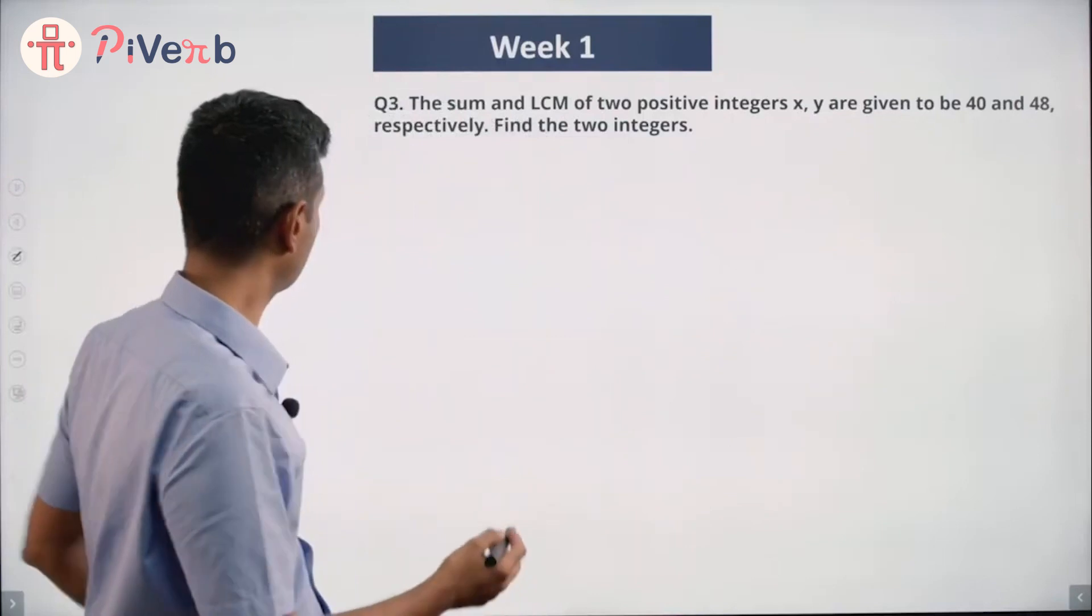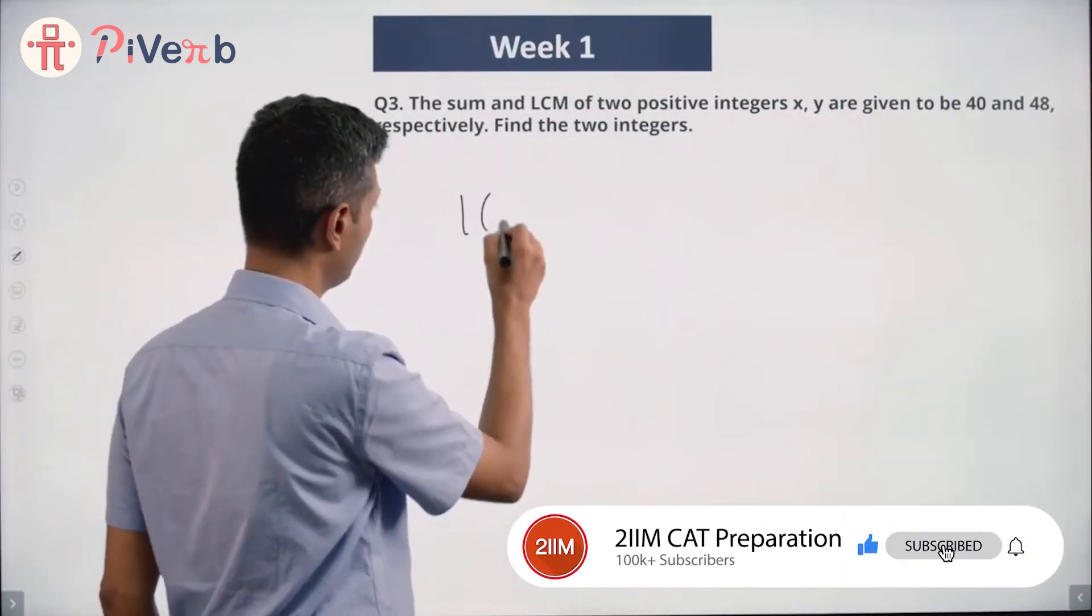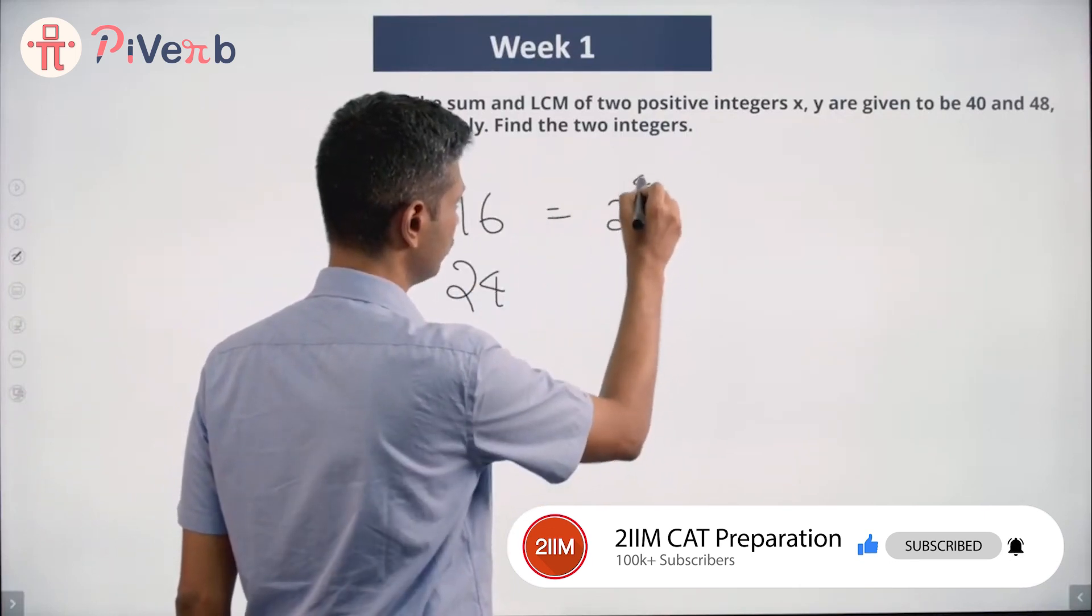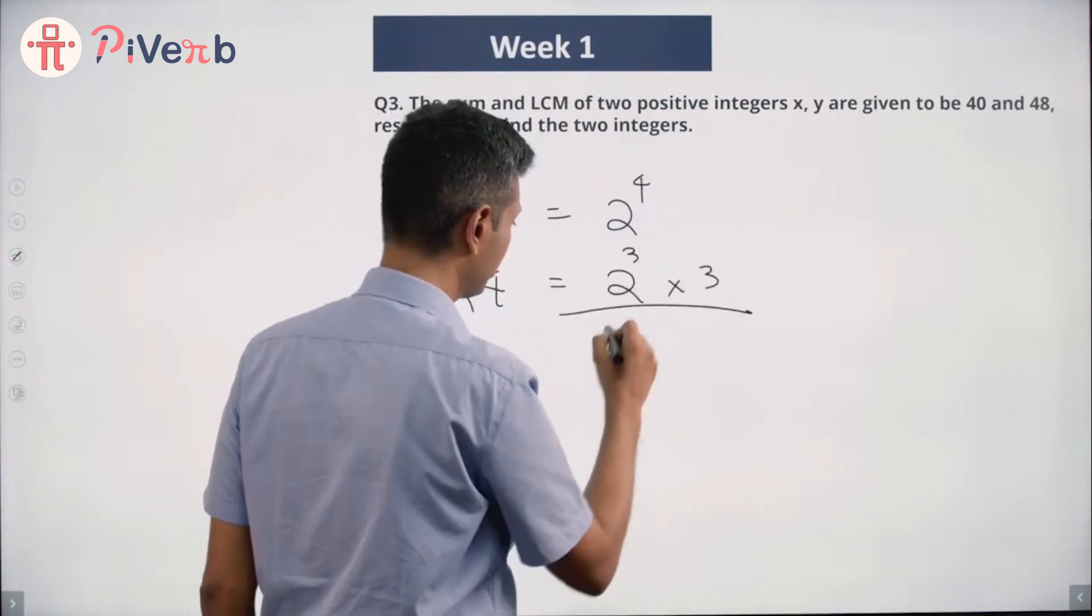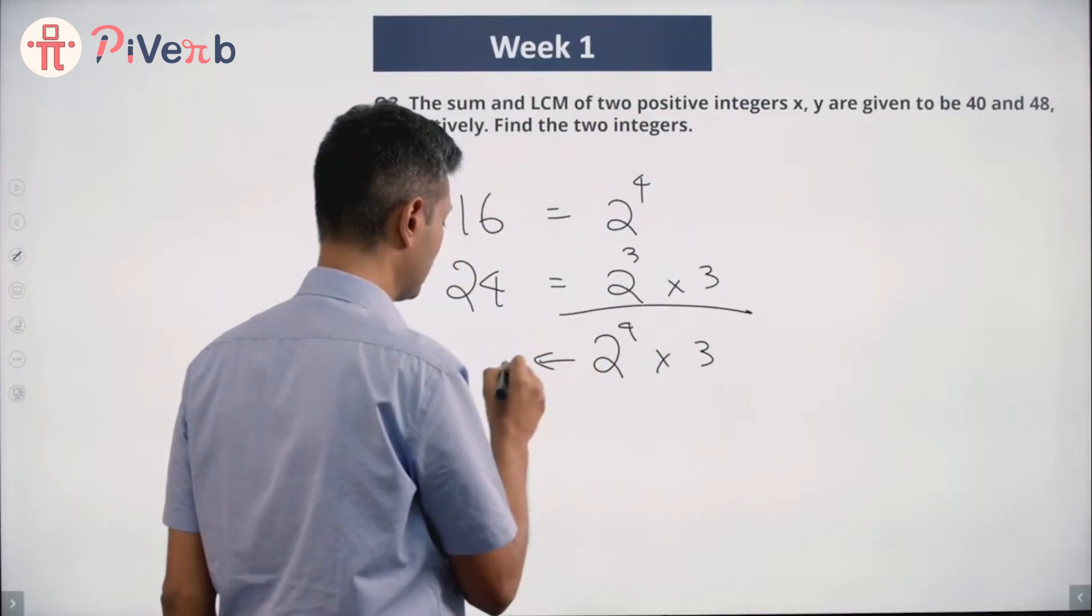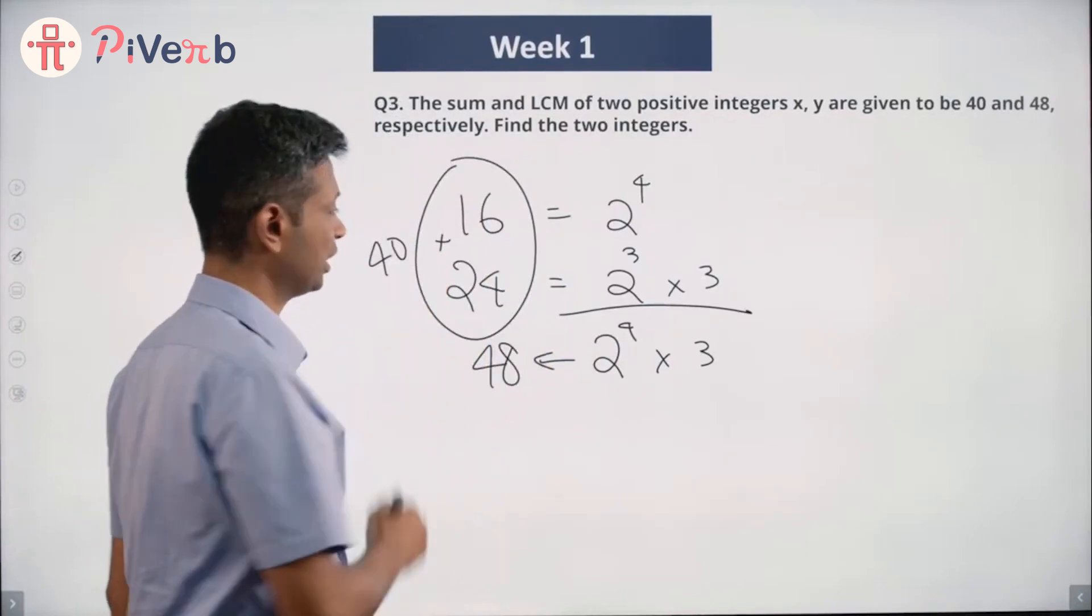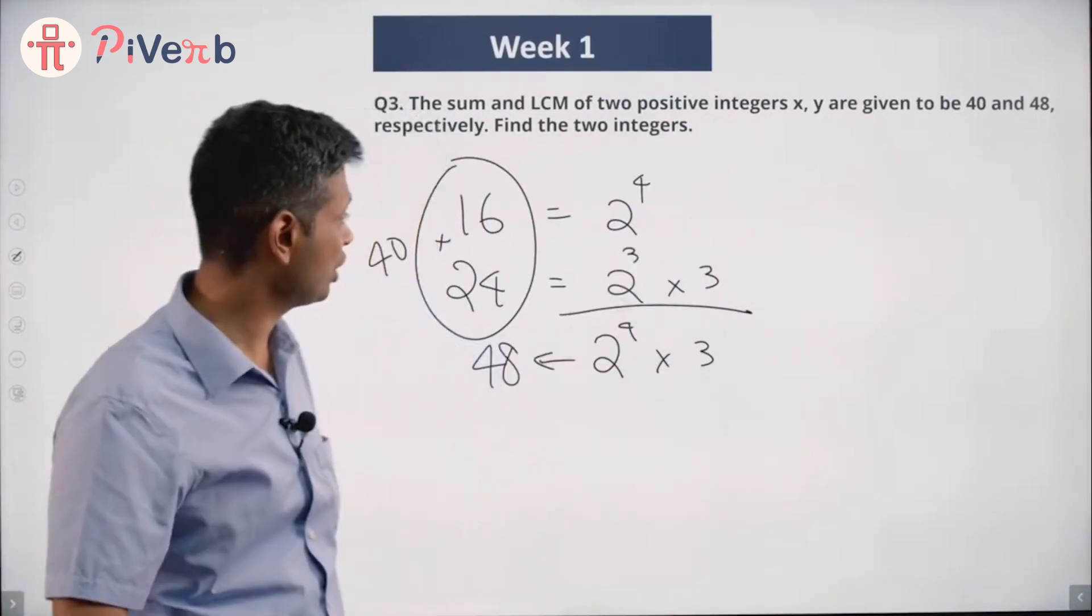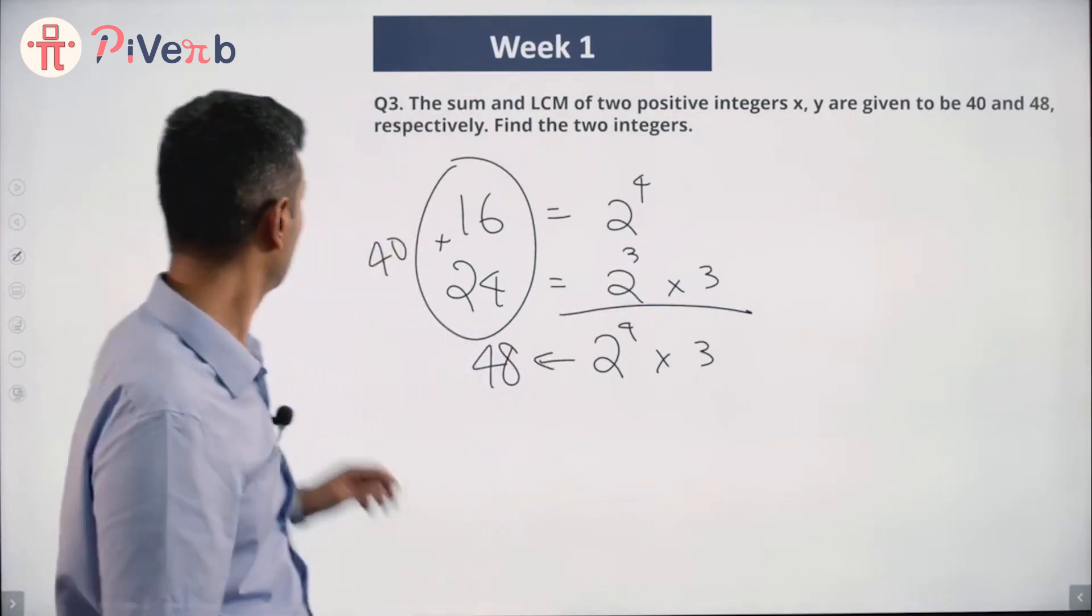Just to recap, the numbers were 16 and 24. 16 is 2 to the power 4; we know 24 is 2 cubed into 3. LCM of these two numbers is 2 to the power 4 into 3, which is 48. That condition is satisfied. We add these two, it is 40. That condition is also satisfied. That is the number we are looking for. X and Y are 16 and 24. 16 and 24, 24 and 16, that does not matter.